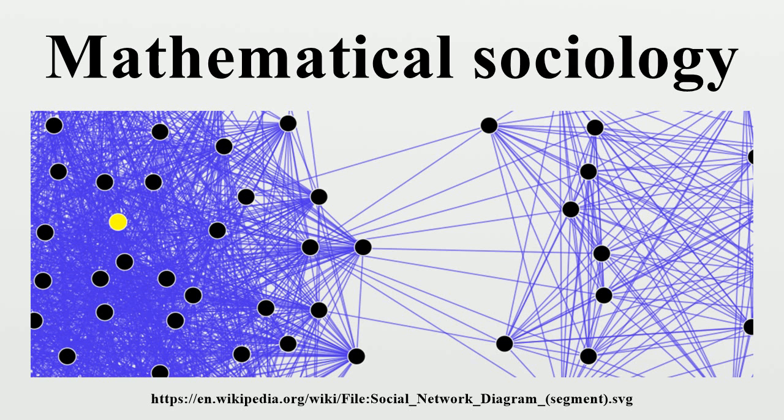In mathematical sociology, the preferred style is encapsulated in the phrase 'constructing a mathematical model.' This means making specified assumptions about some social phenomenon, expressing them in formal mathematics, and providing an empirical interpretation for the ideas.